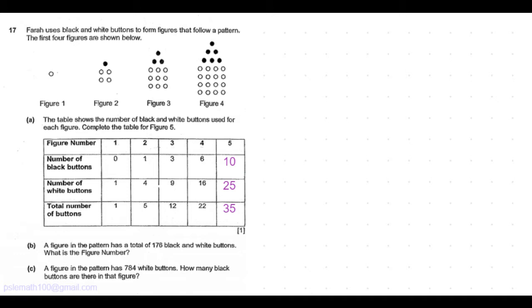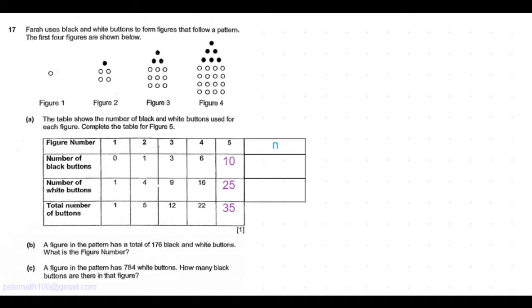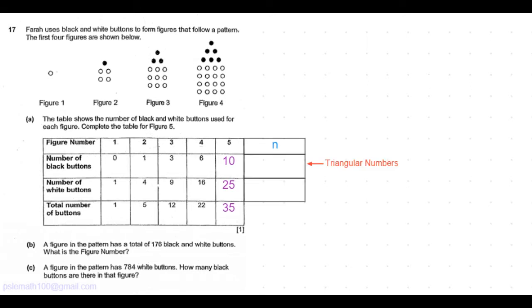A figure in the pattern has a total of 176 black and white buttons. What is the figure number? For this, we should be deriving the formula for the nth figure.